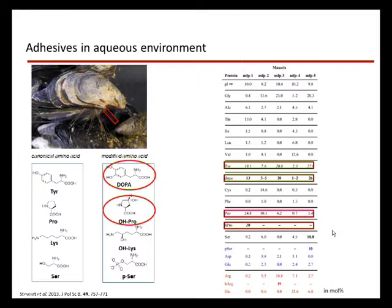Looking at these tyrosines, they contain a DOPA or catechol moiety, and this catechol moiety is known from classical chemistry to be a good coordinator of metal ions. Among the amino acids dominating in the chemical composition of mussel proteins are tyrosine, proline, lysine, and serine. But in chemical analysis, tyrosine is replaced by the modified amino acid DOPA, proline by hydroxyproline, lysine by hydroxylysine, and serine by phosphoserine.